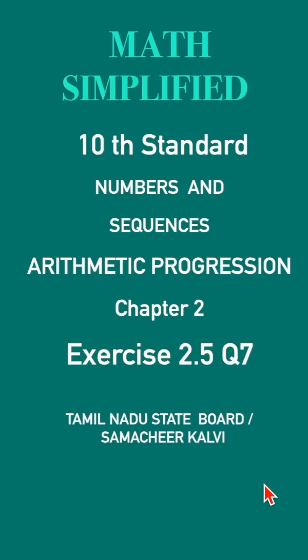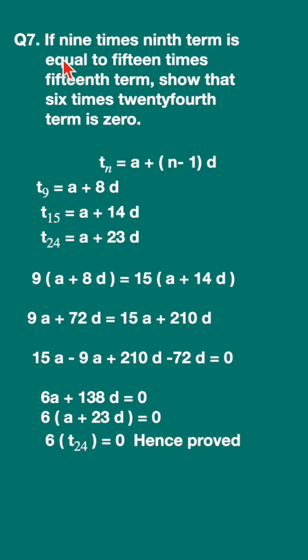Exercise 2.5, Question 7. If 9 times the 9th term is equal to 15 times the 15th term, show that 6 times the 24th term is zero. Let us first write down the general formula of the nth term.